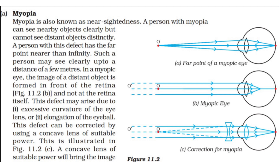In a myopic eye, the image of a distant object is formed in front of the retina instead of on it. This defect may arise due to excessive curvature of the eye lens or elongation of the eyeball.